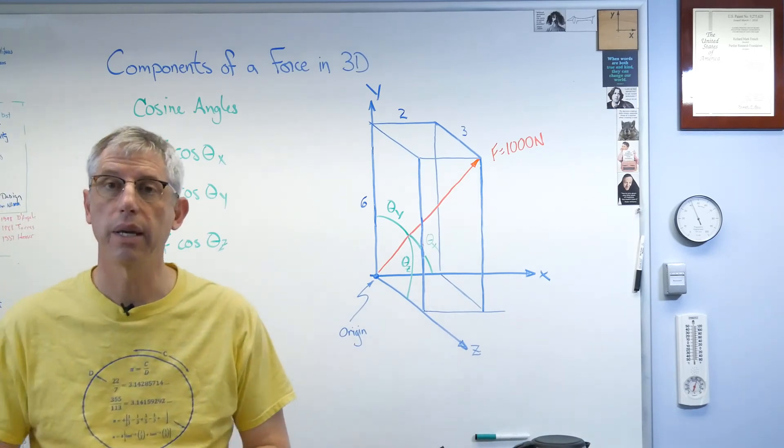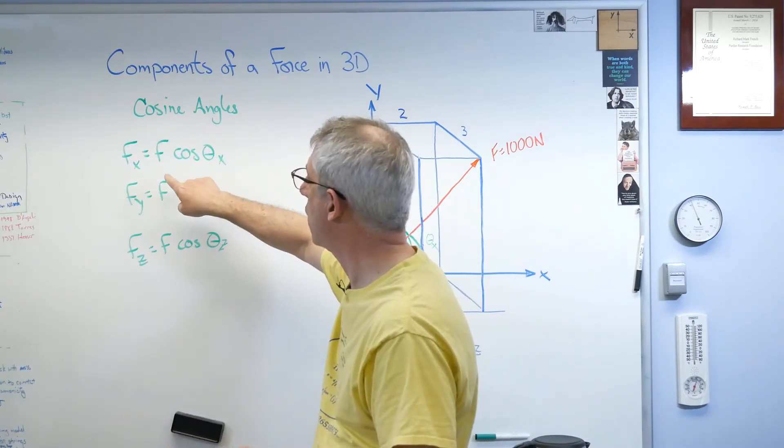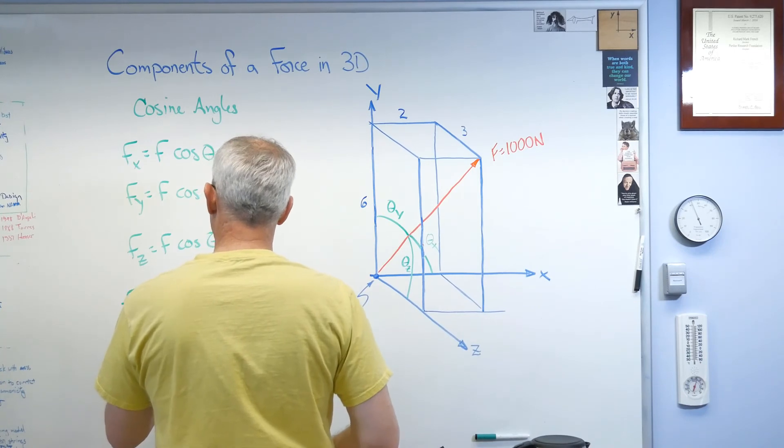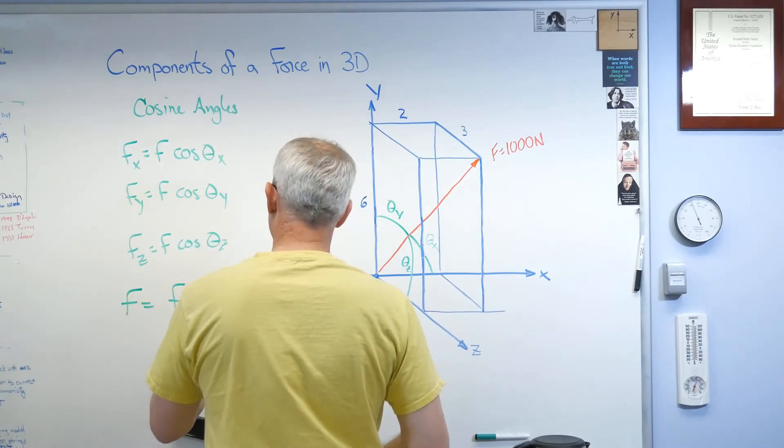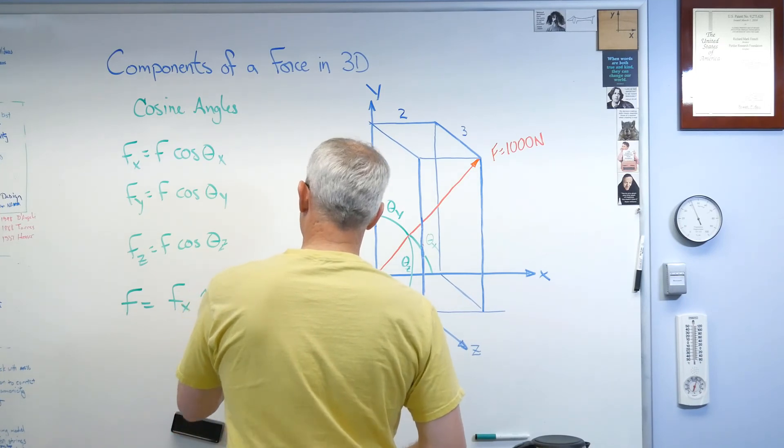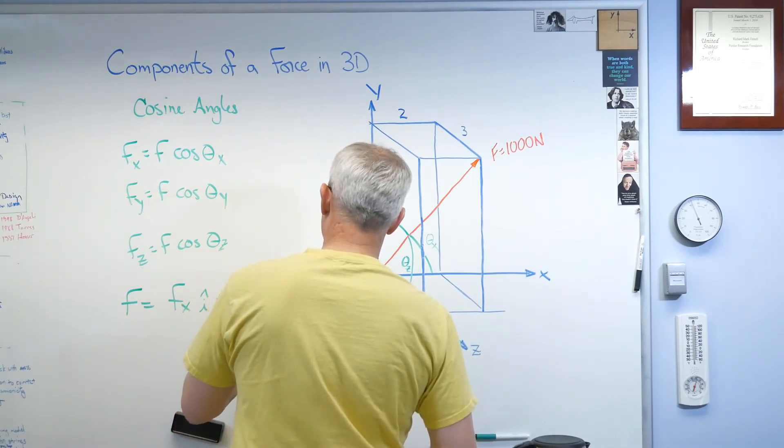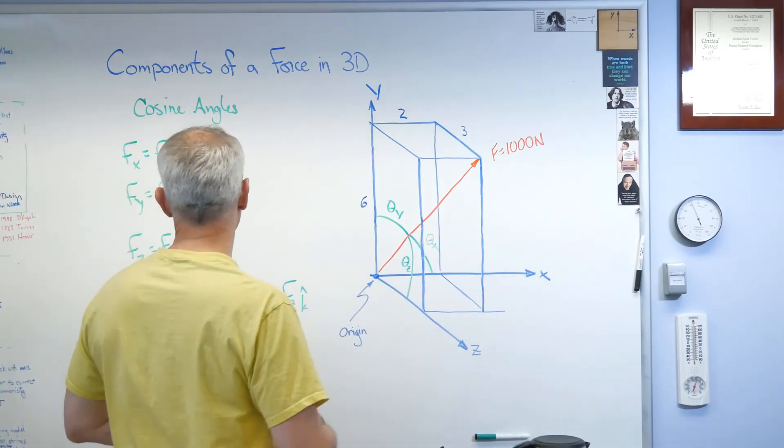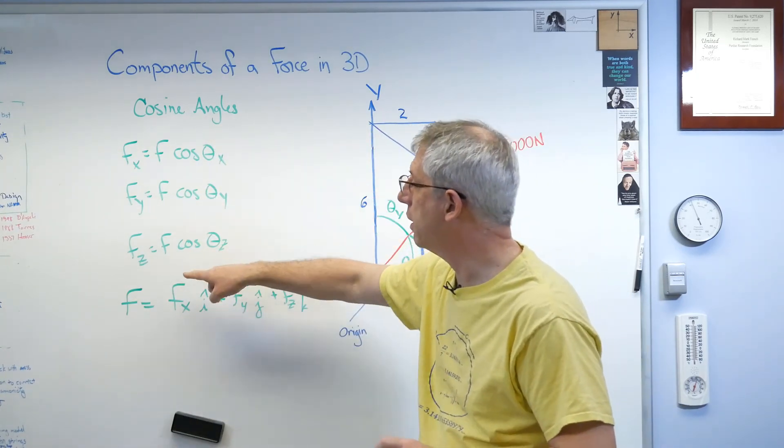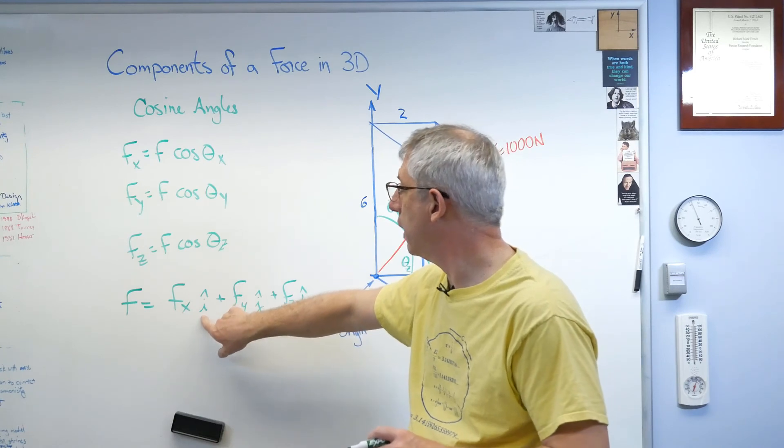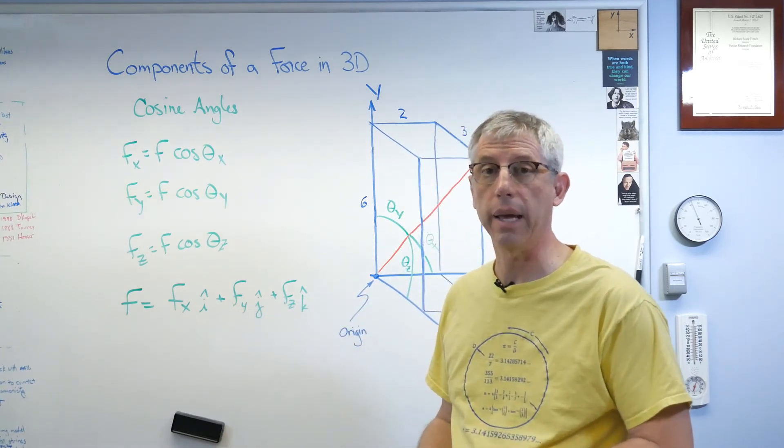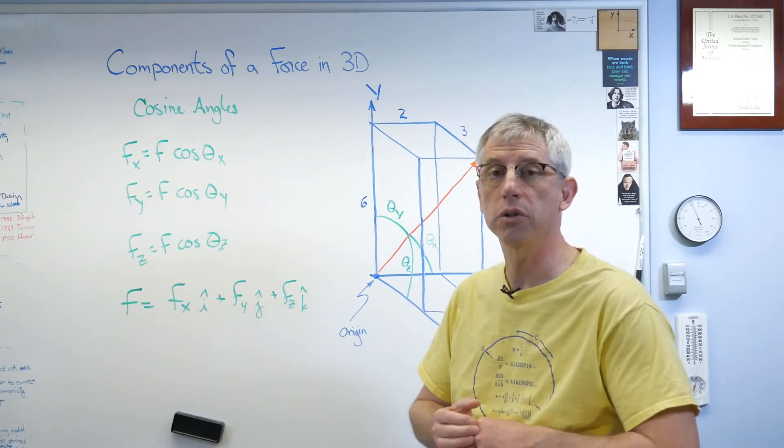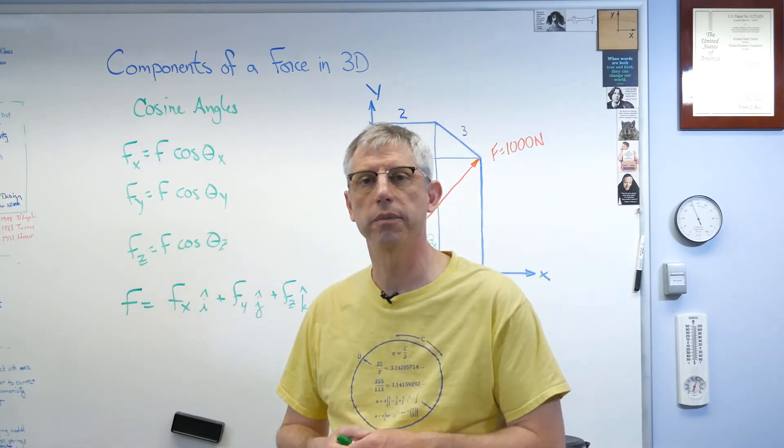All right, we already know what they are from the beginning of this problem. And just to make sure everybody's on board here, this is what it would look like. So components defined right there. And then directions in unit vectors in the x, y, and z directions. So there it is, in a nutshell, how to decompose forces in three dimensions. Hope this helps, and we'll talk to you next time.